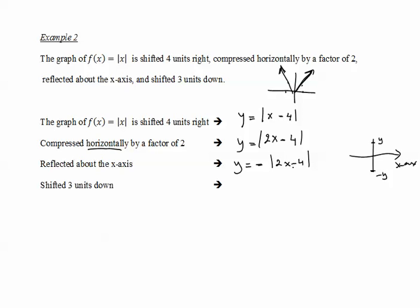The last step is to shift whatever we have previously three units down. So y becomes -|2x - 4| - 3. We reflect it and shift it three units down. This is the equation of the graph with the given description.